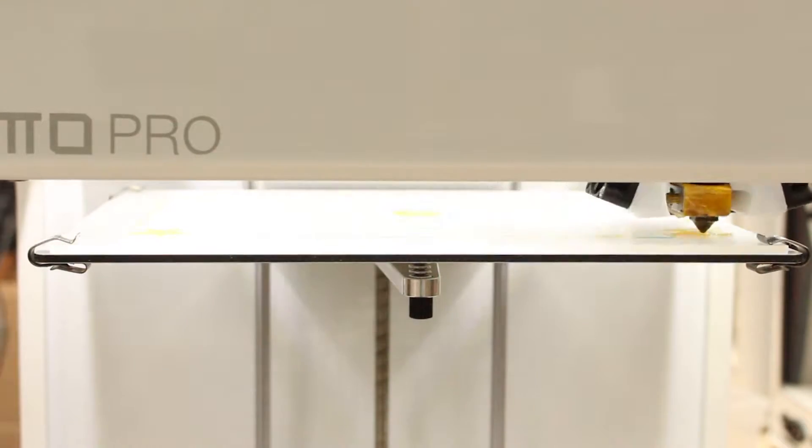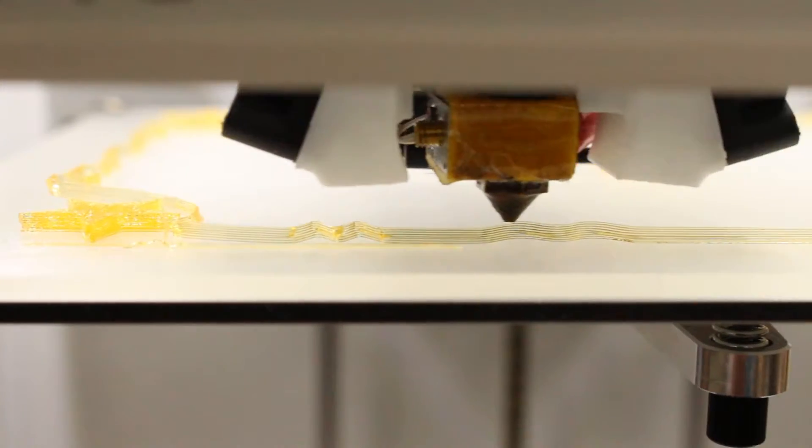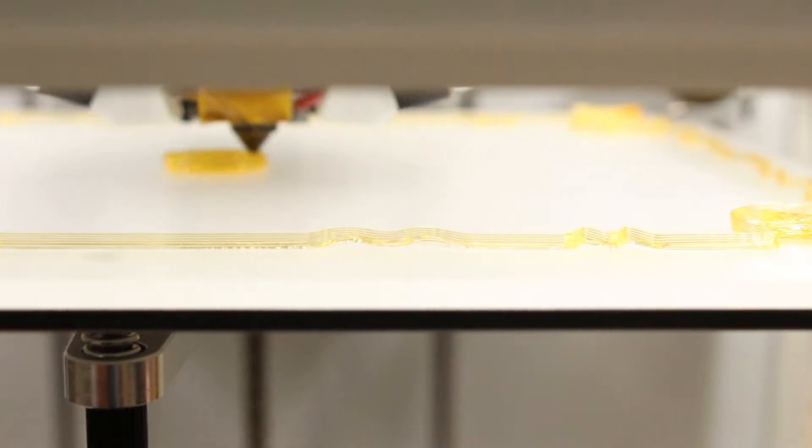As you guessed it, we printed a perimeter for this test as well. It's stuck on properly at first, but now the two corners on the side are lifting up.